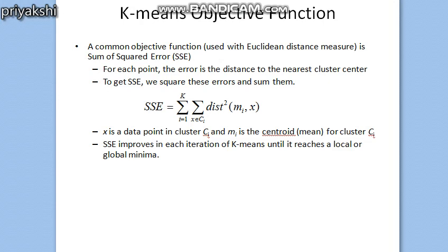For the objective functions which measure the quality of a clustering, in K-means clustering the objective function is known as the sum of the squared error, or SSE, or in some cases it is also known as the scatter. Whenever we take the sum of squared error, we calculate the error of each data point — that is its Euclidean distance to the closest centroid — and then compute the total sum of the squared errors. The objective function is always associated with the Euclidean distance only.